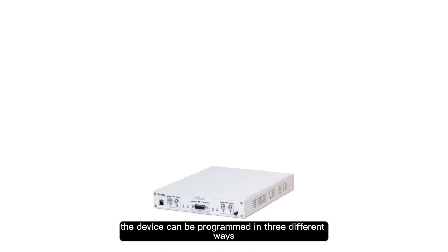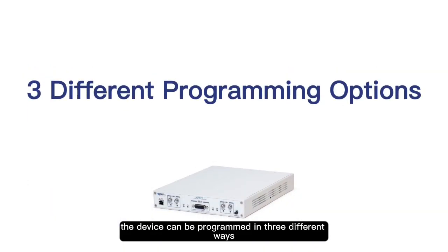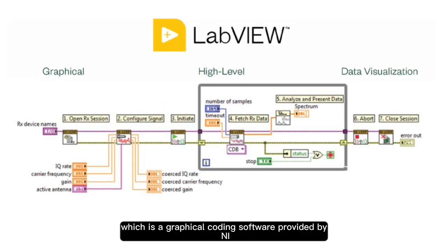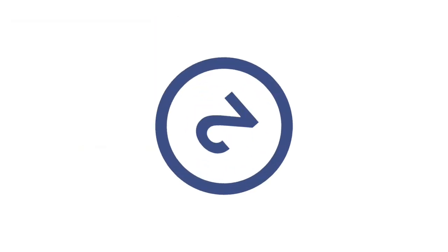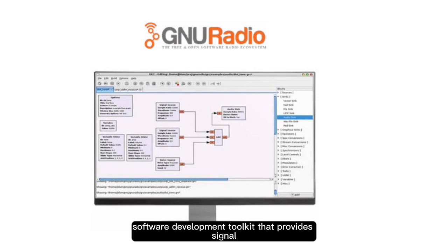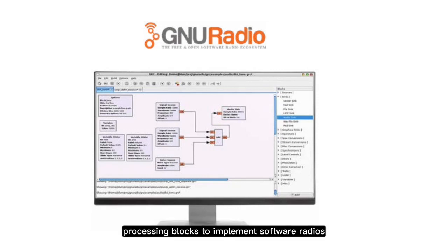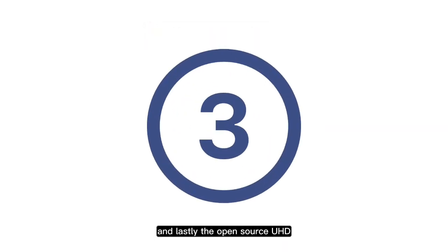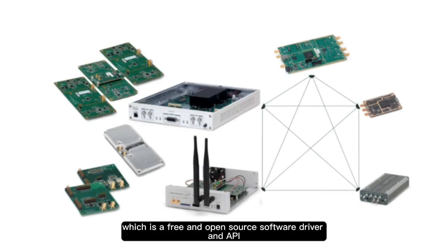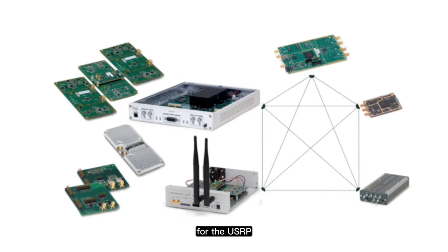The device can be programmed in three different ways. One way is through LabVIEW, which is a graphical coding software provided by NI. Another way is through GNU Radio, which is a free and open-source software development toolkit that provides signal processing blocks to implement software radios. And lastly, the open-source UHD, which is a free and open-source software driver and API for the USRP.